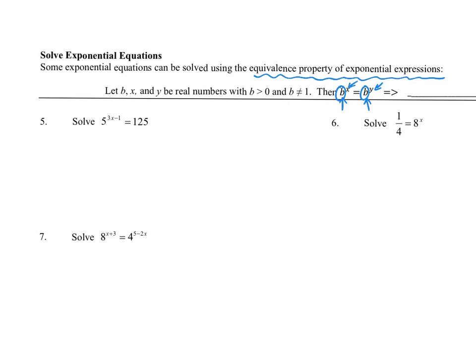A quick comment about b: it's greater than zero, so it's positive. It doesn't equal one, because that would be boring — one to any power is just really equal to the constant function one. So we're talking about exponential functions we've already been looking at. If we have b to the x equals b to the y, then the exponents have to be equal, because exponential functions are one-to-one — if you have inputs getting the same outputs, then those inputs have to be equal.